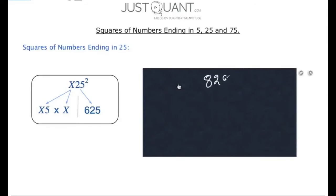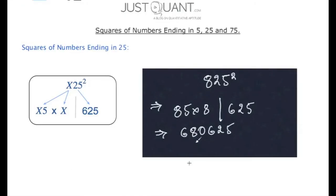Consider 825 square. The right part, as said earlier, is always 625. Now the number preceding 25 in 825 is 8. Therefore, x is 8. Thus, x5 times x is 85 multiplied by 8, which is 680. Hence, combining both the parts, the square of 825 is 680,625.